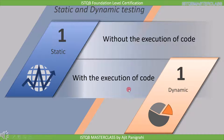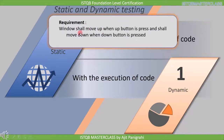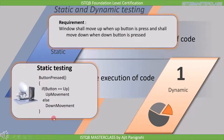Let's try to illustrate this with an example. Let us say that we have a customer requirement that states the window shall move up when the up button is pressed and shall move down when the down button is pressed. To fulfill this requirement you have to write a code for it. Now suppose a developer has written this piece of code — a function implementing the customer's requirement: if button equals up then move up, otherwise move down.